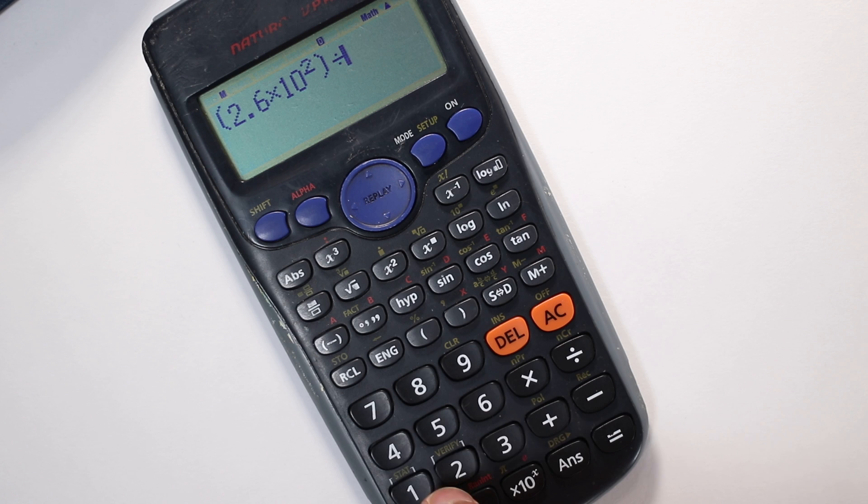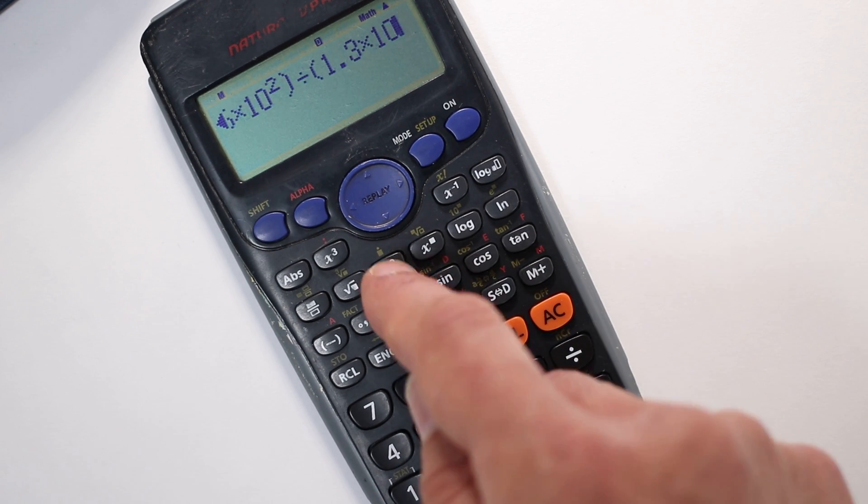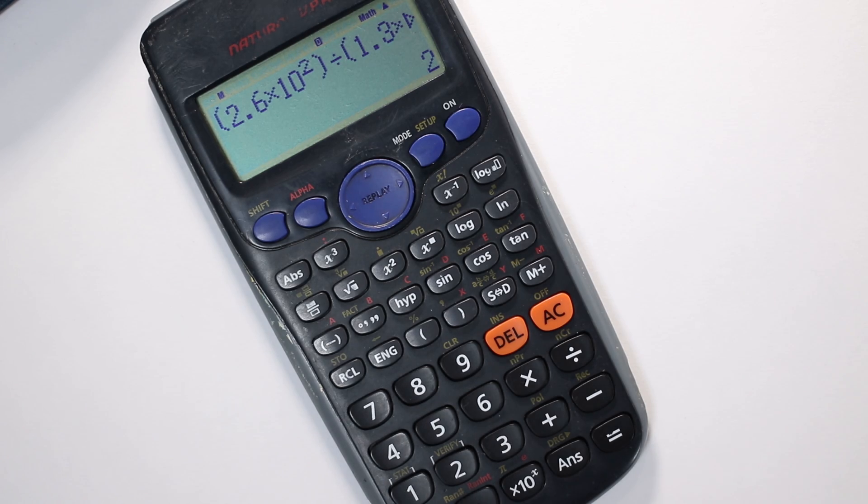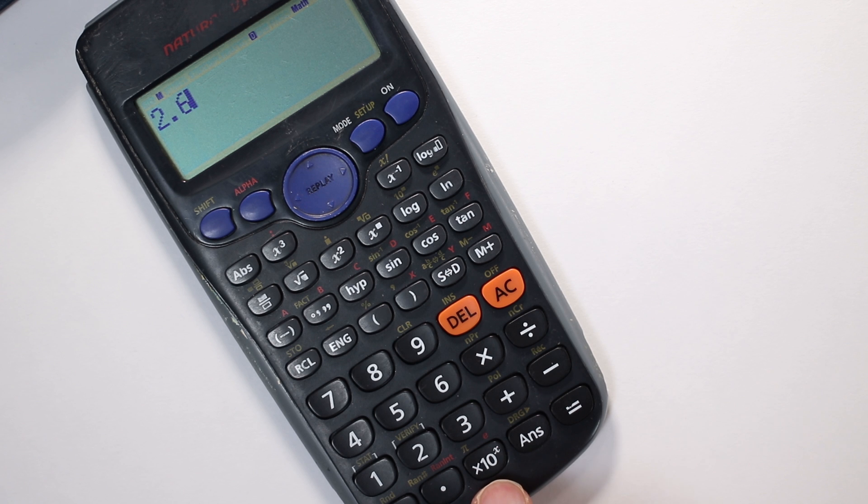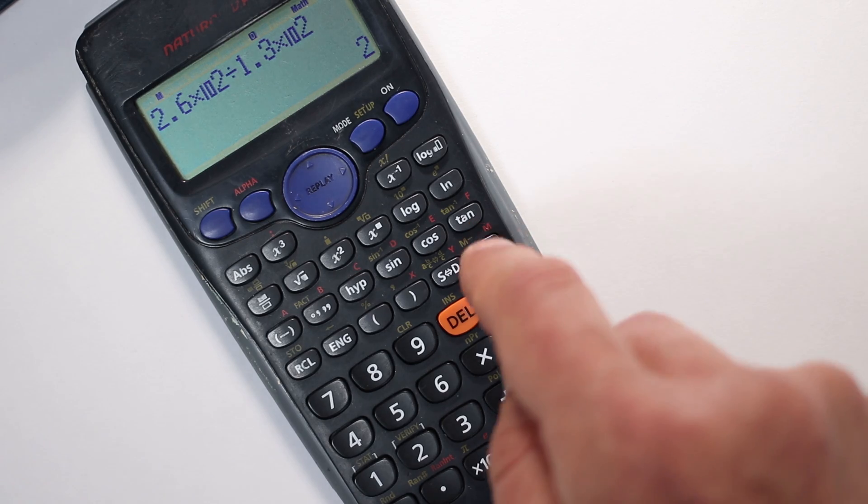The first way is just to put those standard form calculations into brackets. The second way is to use the standard form button on your calculator. Instead of typing in 2.6 times 10 to the power of 2, you just type in 2.6 and then use that button times 10 to the power of x, then type in the 2. Then do the same thing for 1.3, and it gives an answer of 2, which is what we expected.